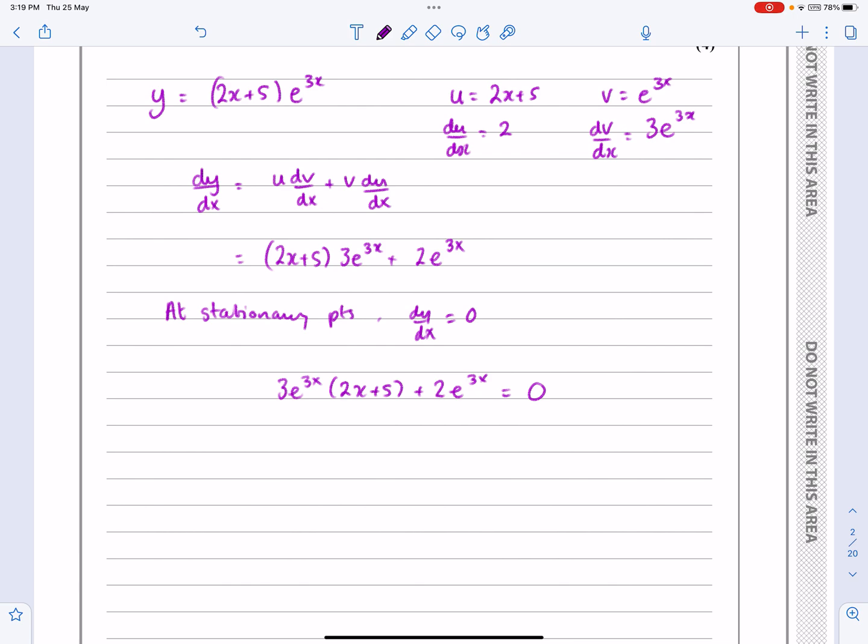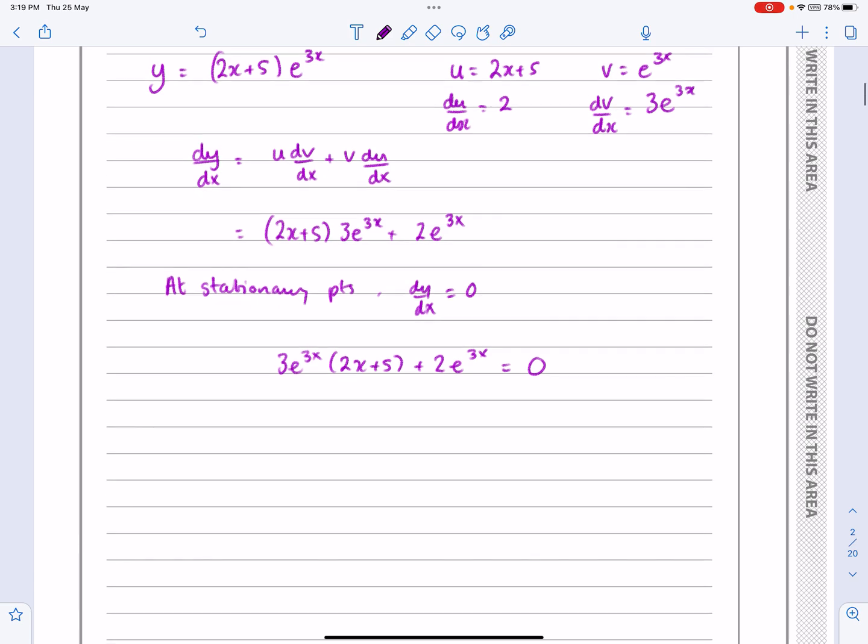Factorize now, so even if we hadn't factorized before, we're going to need to factorize to solve this equation. e^(3x) can come out, which will leave me 3(2x + 5) + 2, equals 0.